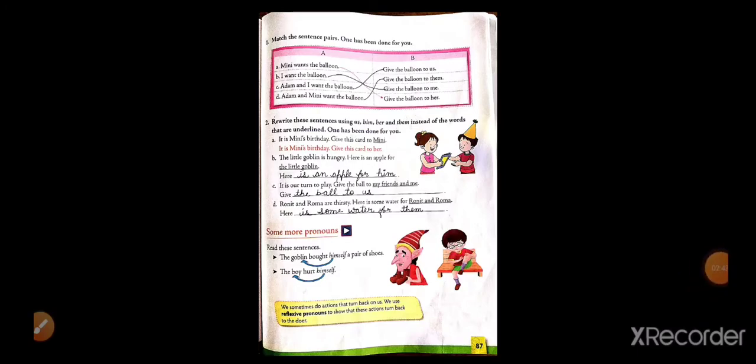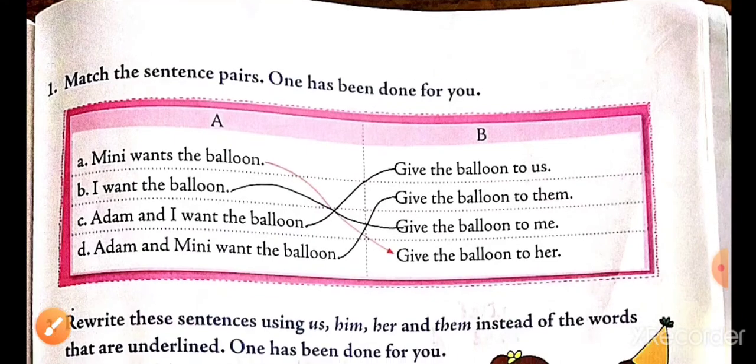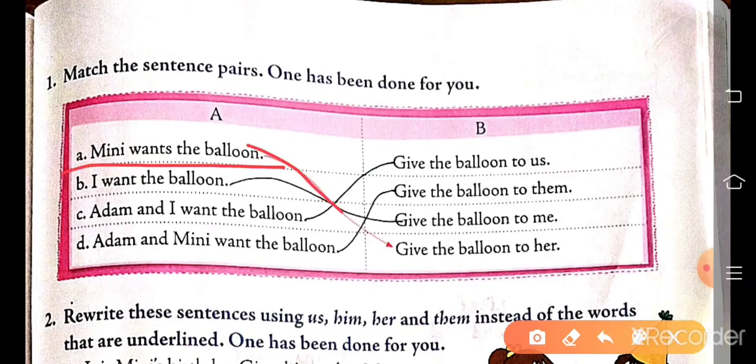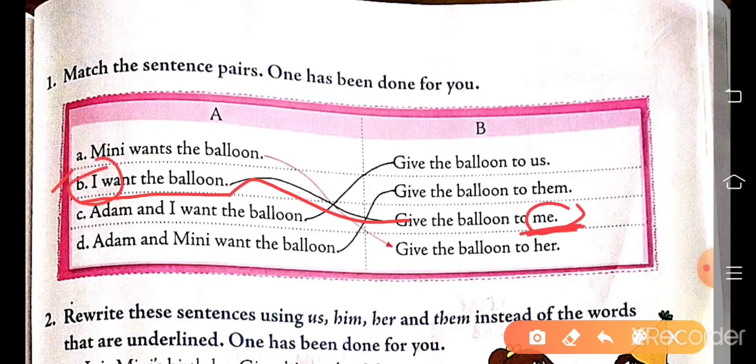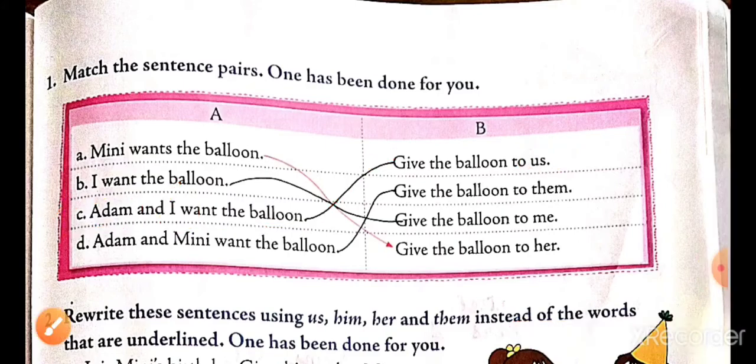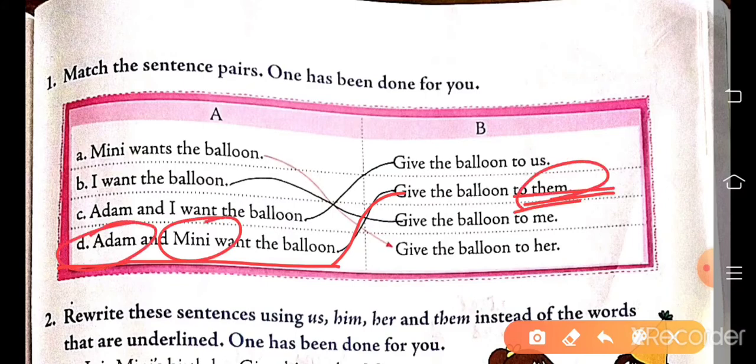Now next page. This is page number 87, and here matching. Match the sentence pairs. One has been done for you. Some sentences are given here, and this side also we have to match them. Minnie wants the balloon. Give the balloon to her. Minnie is a girl, so for her we use 'her'. I want the balloon, so give the balloon to me. For I, what pronoun will we use? Me. Adam and I want the balloon, so give the balloon to us. Adam and I are also included, so us. Adam and Minnie want the balloon, so give the balloon to them. Two names are here, so for two names, 'them'.